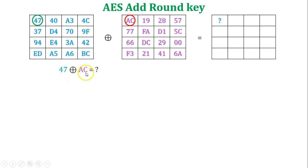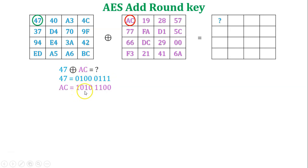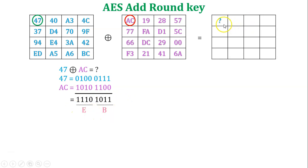So 47 XOR with AC generates the first element of the new state array. XOR is performed only on binary digits, but here all values are in hexadecimal. So first, convert 47 into binary: 0100 0111. Then convert AC into binary: 1010 1100. Now perform the XOR, giving 1110 1011. Convert this binary value into hexadecimal: it is EB. So our first element is EB.